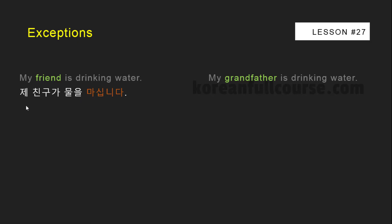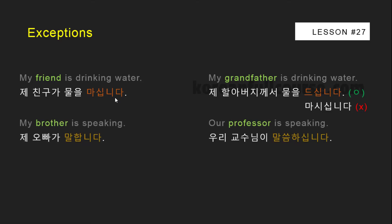My friend is drinking water: 제 친구가 물을 마십니다. To say the same thing about grandfather, you need to use the honorific variant for the verb 마시다, which is 드시다. So instead of saying 제 할아버지께서 물을 마시십니다, you say 제 할아버지께서 물을 드십니다. Another example — My brother is speaking: 제 오빠가 말합니다. Our professor is speaking: 우리 교수님이 말씀하십니다. You can say 말하십니다, but it would be less polite than 말씀하십니다.